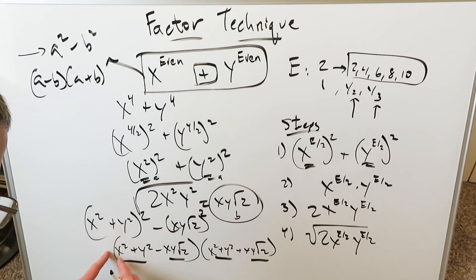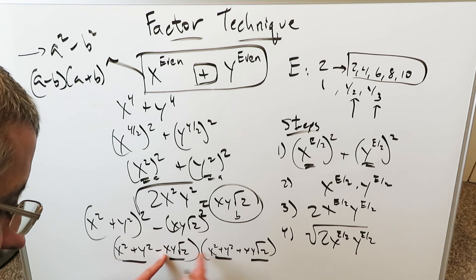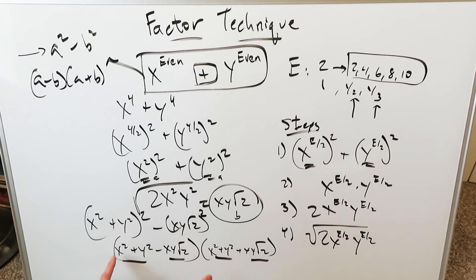If you were to open this up, x squared multiply with that, y squared with that, this with that, everything will cancel out except for the x to the power of 4 and y to the power of 4, which will remain, and they will prove and check that your factors are indeed good.